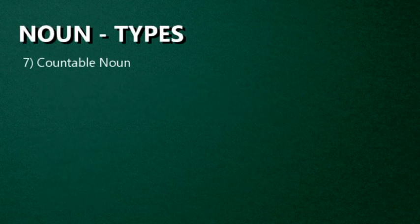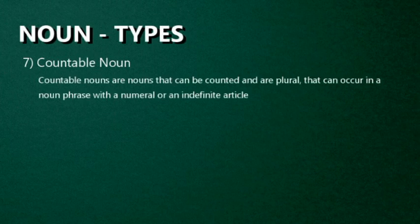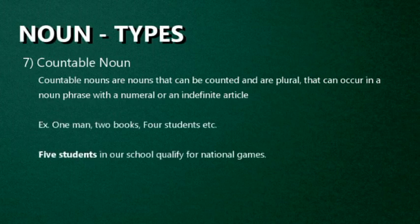Seventh one: Countable Noun — so easy! Countable nouns refer to things that can be counted as individual units, and that can occur in a noun phrase with a numeral or indefinite article. Examples: one man, two books, four students. For example: Five students in our school qualify for the national games — students can be counted. Common nouns and concrete nouns can be countable nouns.